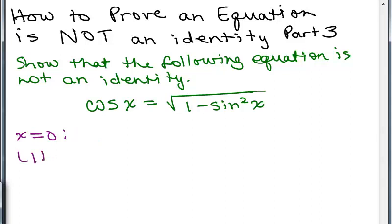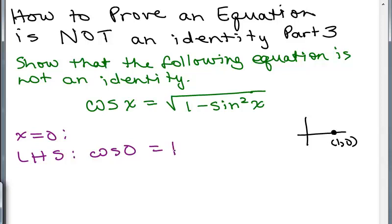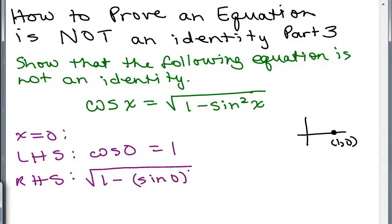If X equals 0, the left-hand side is the cosine of 0. The ordered pair at 0 is (1, 0), and the cosine is the x-coordinate, so that's 1. The right-hand side is the square root of 1 minus sine squared 0. The sine of 0 is 0 — it's the y-coordinate at the ordered pair (1, 0). So we have the square root of 1 minus 0 squared, which is the square root of 1 minus 0, which is 1. The square root of 1 is 1.